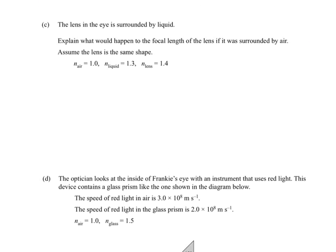See, the lens in the eye is surrounded by liquid. Explain what would happen to the focal length of the lens if it was surrounded by air. I'm assuming the lens is the same shape. So without changing the lens, we've got two situations. We've got a situation where you've got air around the lens. And we've got another where you have liquid around there. And we've given the refractive indexes of the liquid and the air. The lens is still the same for both, so that doesn't affect anything.